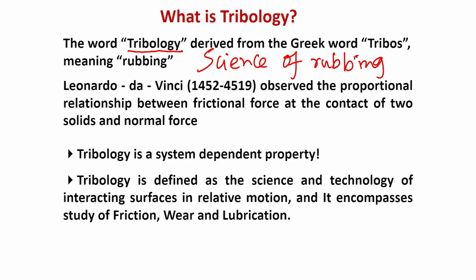From a historical perspective, Leonardo da Vinci observed for the first time, a couple of centuries back, that the frictional force at the contact of two solids is proportional to the normal force. If the frictional force is F, then F is proportional to N, where N is the normal force, giving rise to the equation F = μN. Here, μ is the coefficient of friction, F is the frictional force, and N is the normal load.